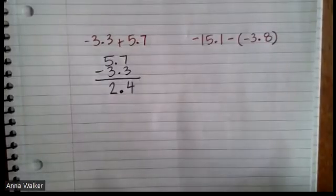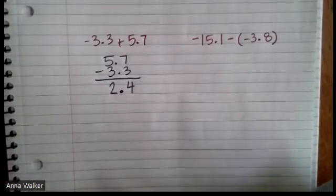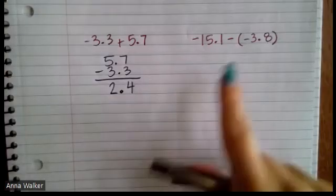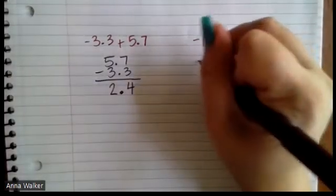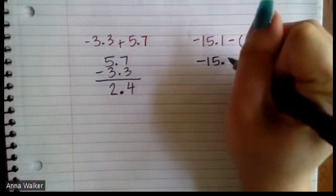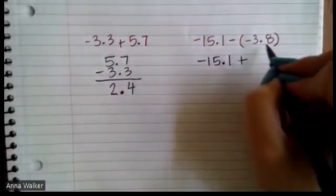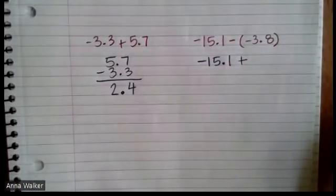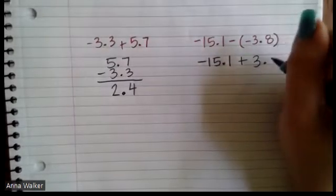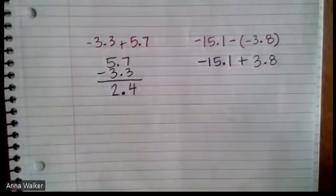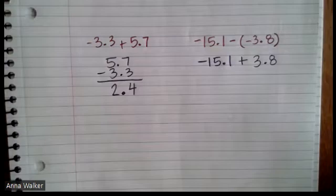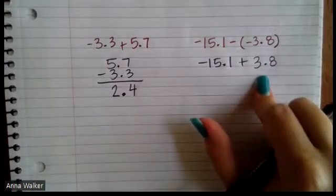We have -15.1 minus -3.8. So since we are subtracting a negative, remember, we can rewrite this as adding the opposite. So -15.1 plus the opposite of -3.8, which would just be a positive 3.8. So if we have this situation, -15.1 plus 3.8,